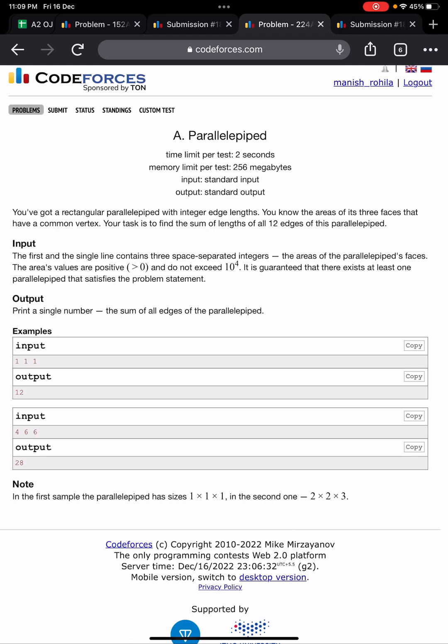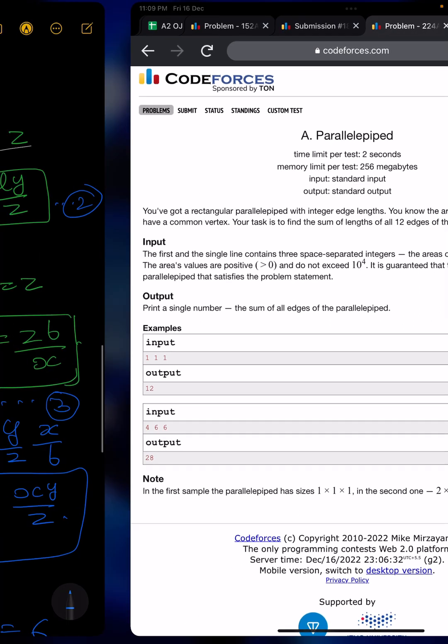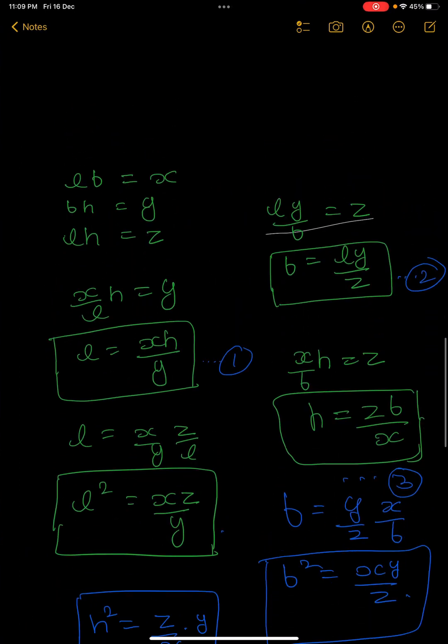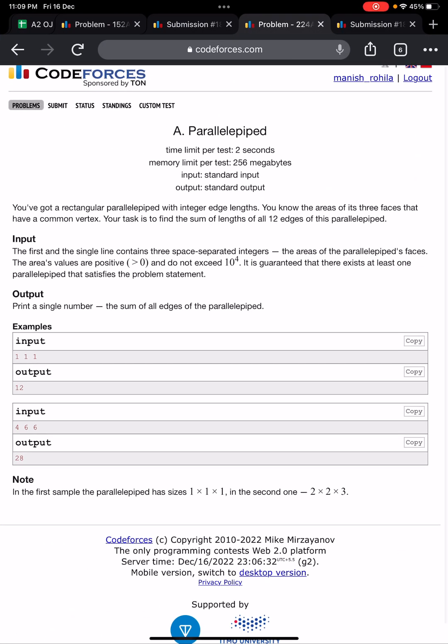This is a very basic problem of mathematics. The area of a particular face is length times breadth, or breadth times height, or length times height. Let us solve this problem. You are given as input the areas of three parallelepiped faces.